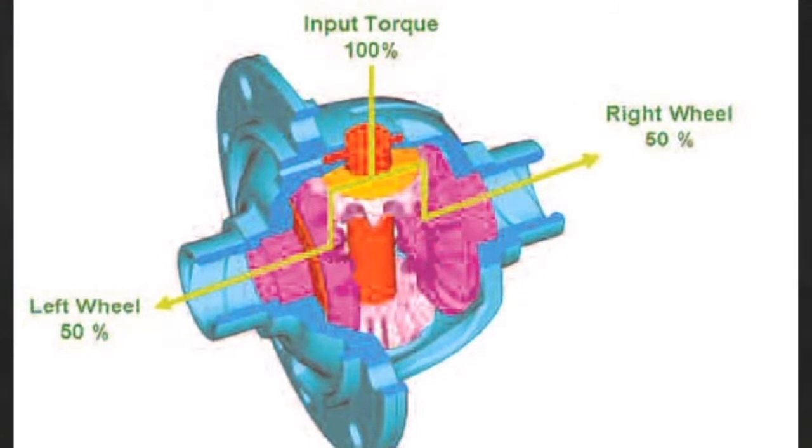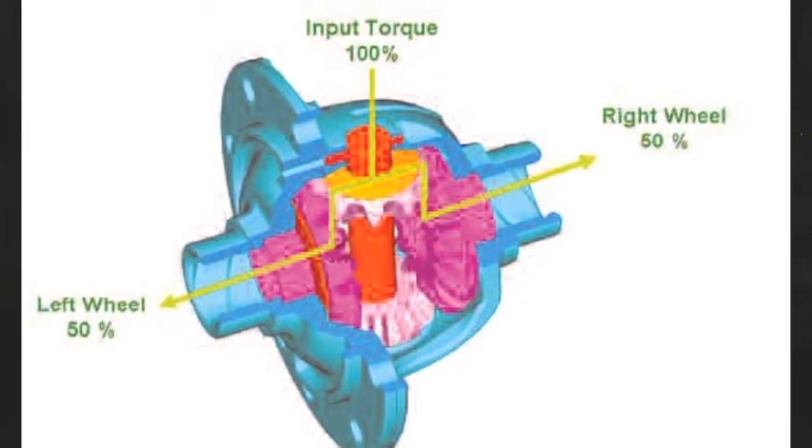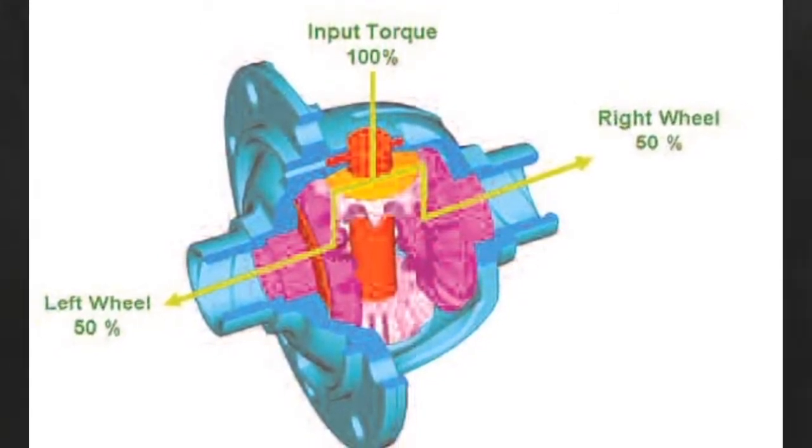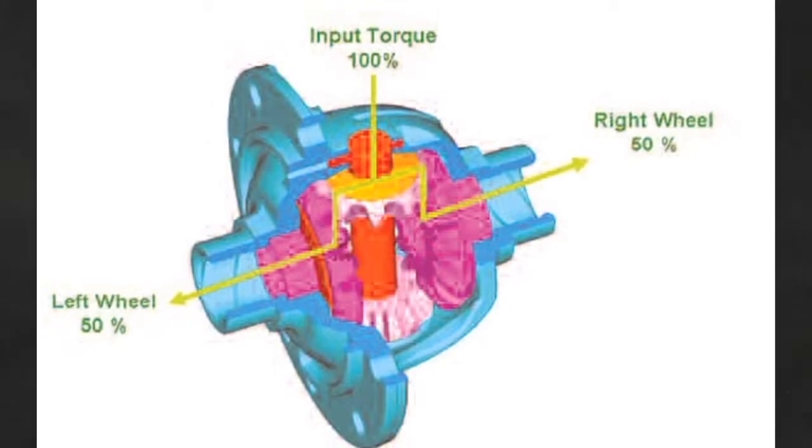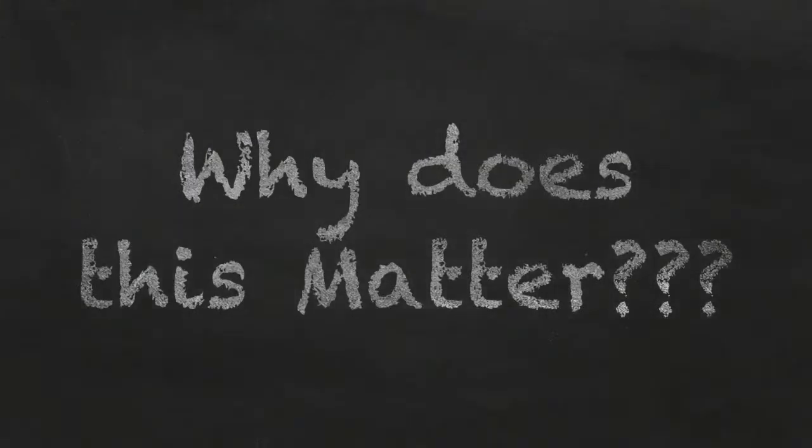The result of making a differential Positrack is that the torque or twisting force from the drivetrain is now shared between both wheels. And why does this matter?